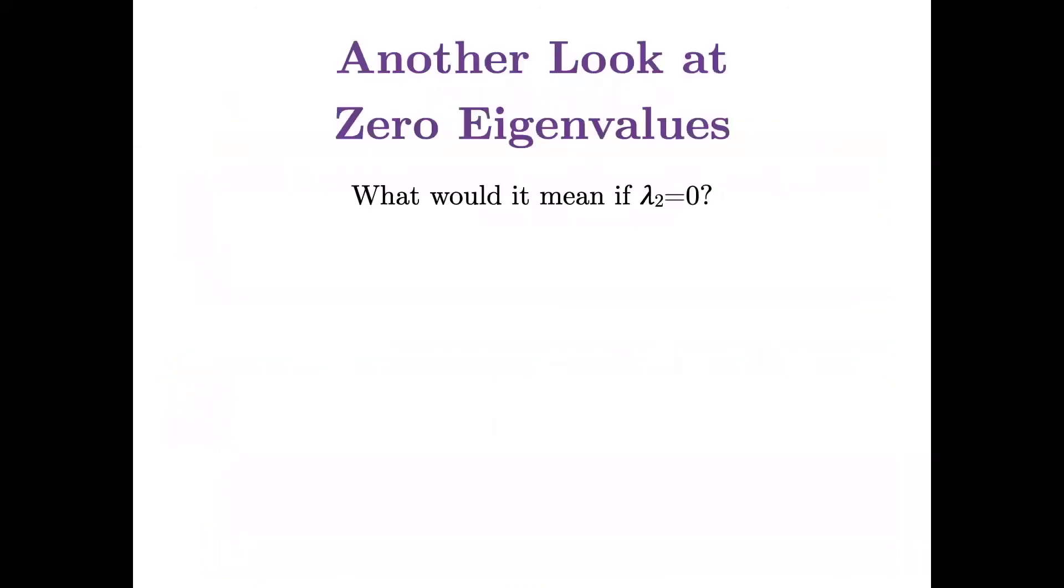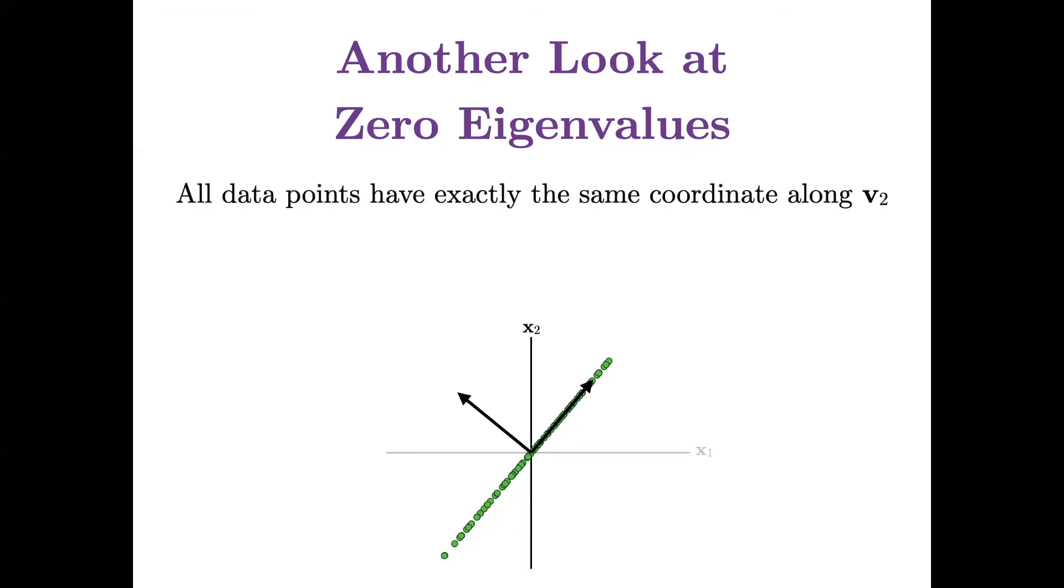And now let's take another look at zero eigenvalues. What would it mean in my earlier picture if lambda 2 was equal to zero? Well, it would mean that variance along that direction is exactly zero. Well, how do I get zero variance? I can only have zero variance when I have a constant vector. So that means that all of the coordinates along that direction are exactly the same.